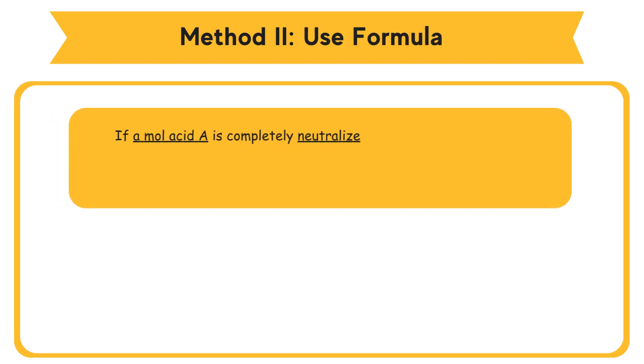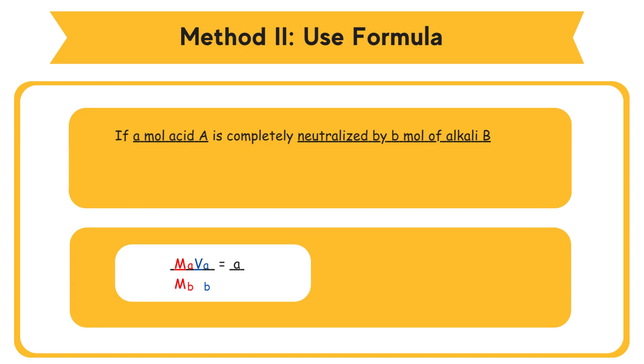Method 2: Use formula. If a mol acid A is completely neutralized by b mol of alkali B, then the formula MAVA/MBVB = a/b can be used to solve the calculation. Acid A react with alkali B to become salt plus water.